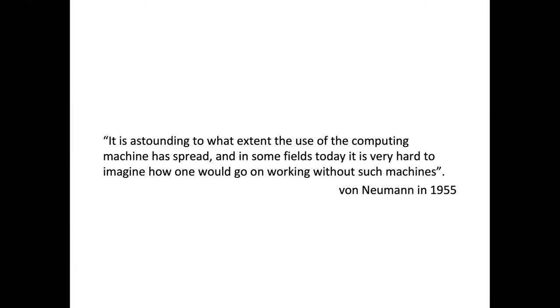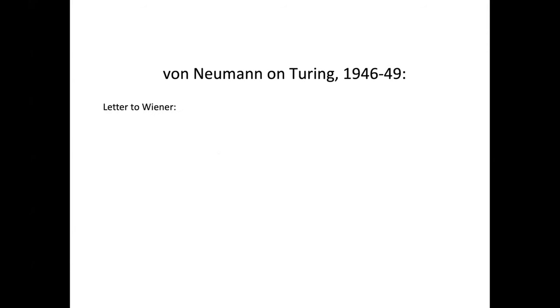Both Turing and von Neumann understood very clearly the huge significance of the development set in motion at the Moore School and other centers of earlier work on computers. By 1955, von Neumann was saying: 'It is astounding to what extent the use of the computing machine has spread, and in some fields today it is very hard to imagine how one would go on without such machines.' Jack mentioned von Neumann's influence on Turing — but what about influence in the other direction? Did Turing also influence von Neumann? Was von Neumann even familiar with the ideas in Turing's 1936 paper when thinking about stored program computers? From documents dated 1946 and later, we know that von Neumann understood Turing's uncomputable numbers very well by that time.